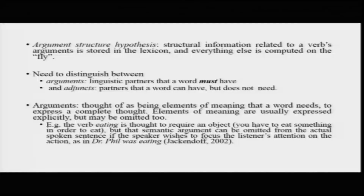Arguments are elements of meaning that are usually expressed explicitly but can sometimes be omitted. For example, the verb 'eating' is thought to require an object — 'I ate, what did you eat?' — it must require an object. But that semantic argument can be omitted from the actual spoken sentence. If you say 'Dr. Phil was eating,' it is not completely necessary to include what he was eating. It might have been a banana or a pancake, but if it does not appear, it does not really break the sentence.